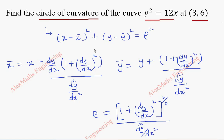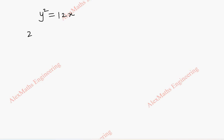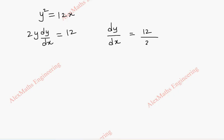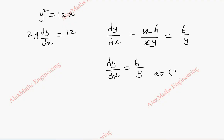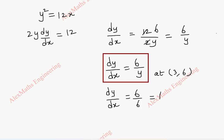We take the curve y² = 12x and differentiate to get 2y(dy/dx) = 12, so dy/dx = 12/(2y) = 6/y. At the given point (3, 6), substituting y = 6 gives dy/dx = 6/6 = 1. Now we find the second derivative d²y/dx².